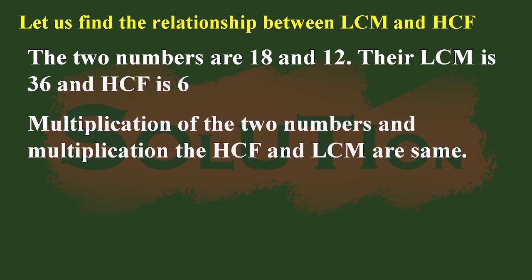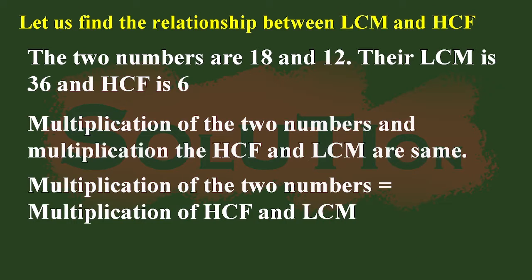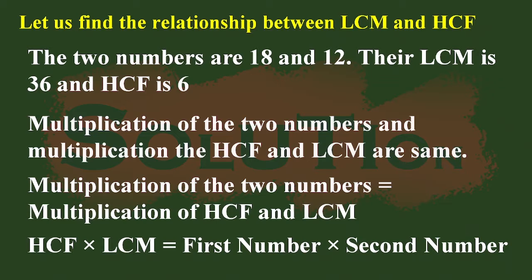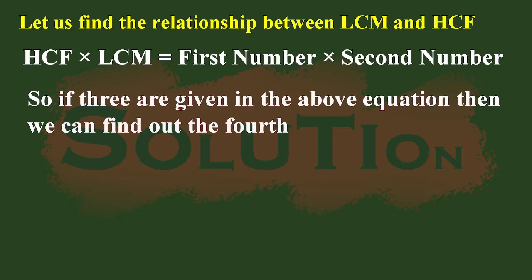So we can conclude that the multiplication of the two numbers equals the multiplication of the HCF and LCM. Writing this as an equation: HCF × LCM = first number × second number. So if any three of the four values are known, we can find the fourth. For example, if we know HCF, LCM, and the first number, we can find the second number. Or if we know the two numbers and the LCM, we can find the HCF.